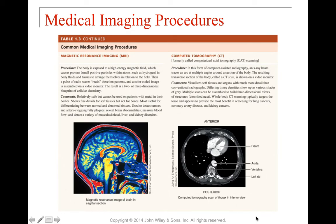An MRI helps with soft tissue, showing fine detail for soft tissues but not bones — essentially the opposite of an X-ray. It can detect tumors, fatty plaque, and brain abnormalities. Unfortunately, it cannot be used if individuals have any metal in their body because the magnetic field could dislodge it, so patients must be truthful about any metal implants or shrapnel.